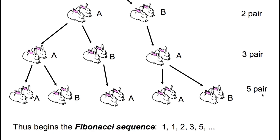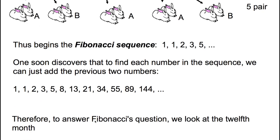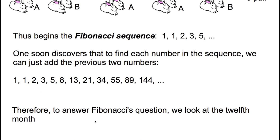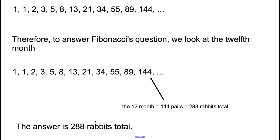Counting the pairs on the right column: I have one pair, still one pair, then two pairs, then three pairs, then five pairs — and we go on like that. This is called the Fibonacci sequence: 1, 1, 2, 3, 5 — and it continues. Each number in the sequence is found by adding the previous two numbers. One plus one is two; one plus two is three; two plus three is five; three plus five is eight; five and eight is 13; eight and 13 is 21 — and so on. To answer Fibonacci's question, we look at the 12th month: that's 144 pairs, which is 288 rabbits total.